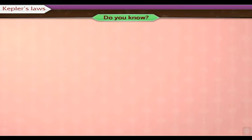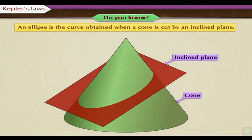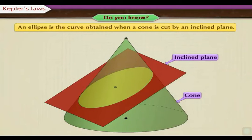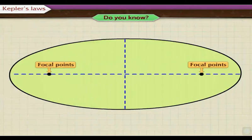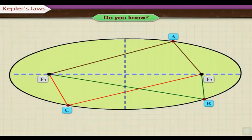Do you know? An ellipse is the curve obtained when a cone is cut by an inclined plane. An ellipse has two focal points. F1 and F2 are two focal points of the ellipse shown here. The sum of the distances to the two focal points from every point on the curve is constant.